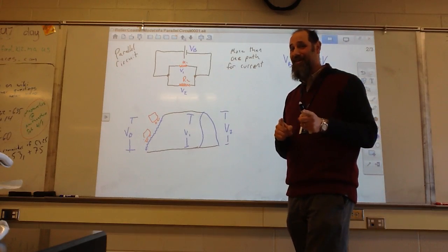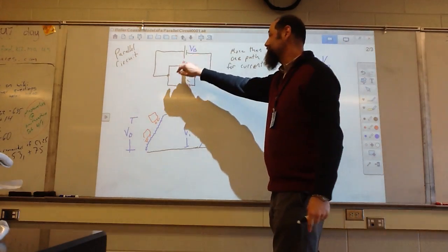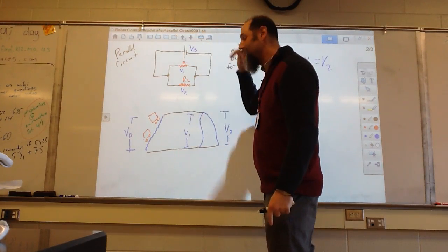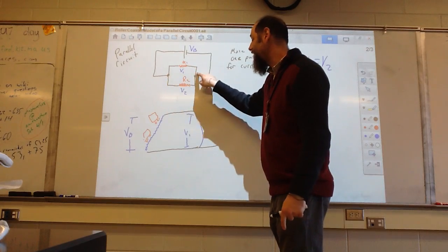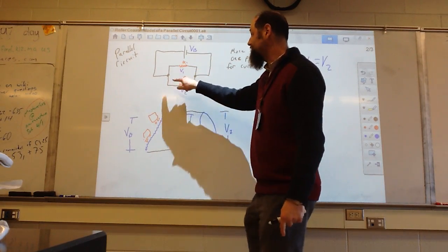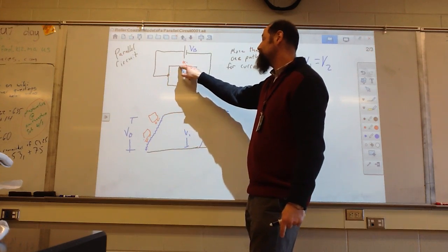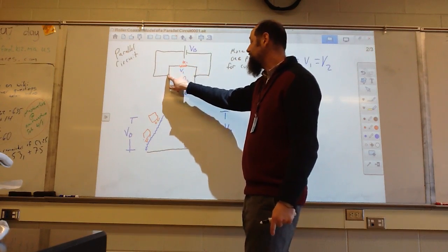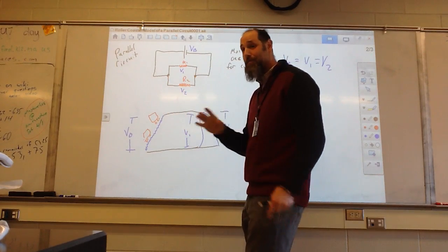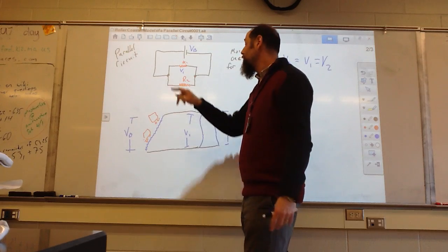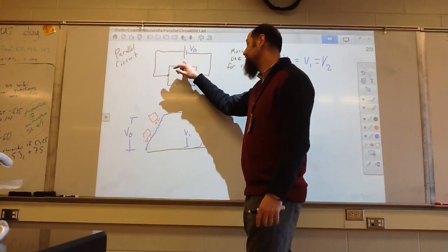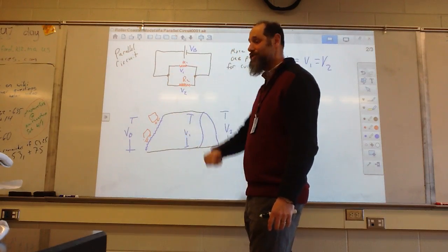Keep in mind, this is different from series. In series, the voltage across each resistor added up to give the battery voltage. Not the case here. Because we have separate paths and each path starts at the top and ends at the bottom, it's as if each path is just a one-resistor circuit. As opposed to series where you have to go through multiple resistors — multiple hills — before getting to the bottom.